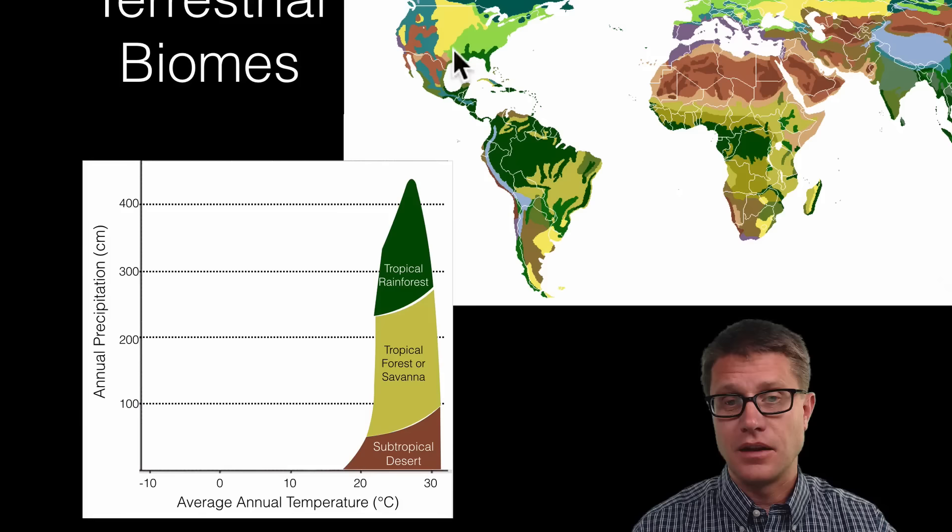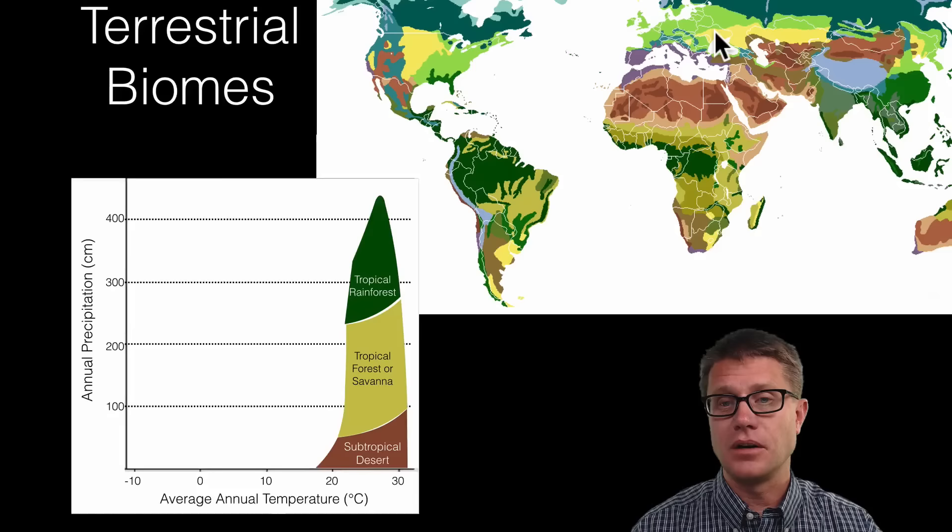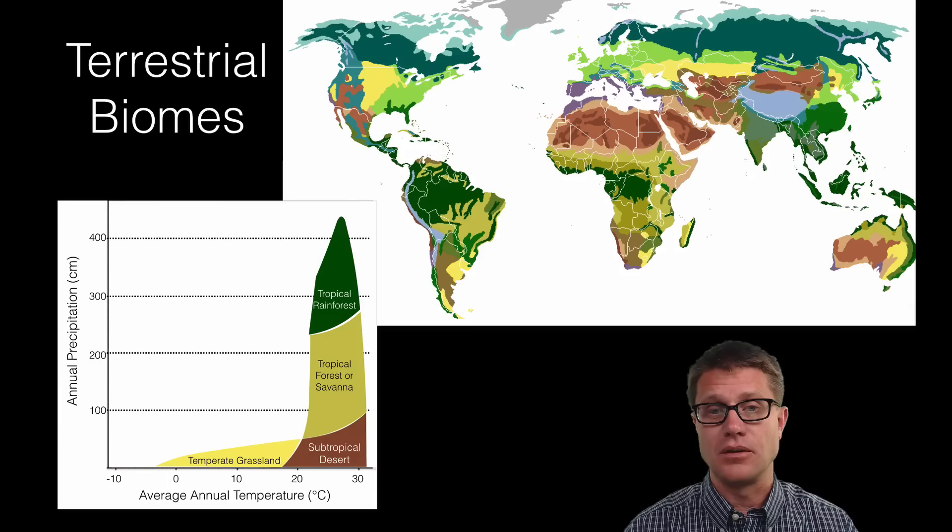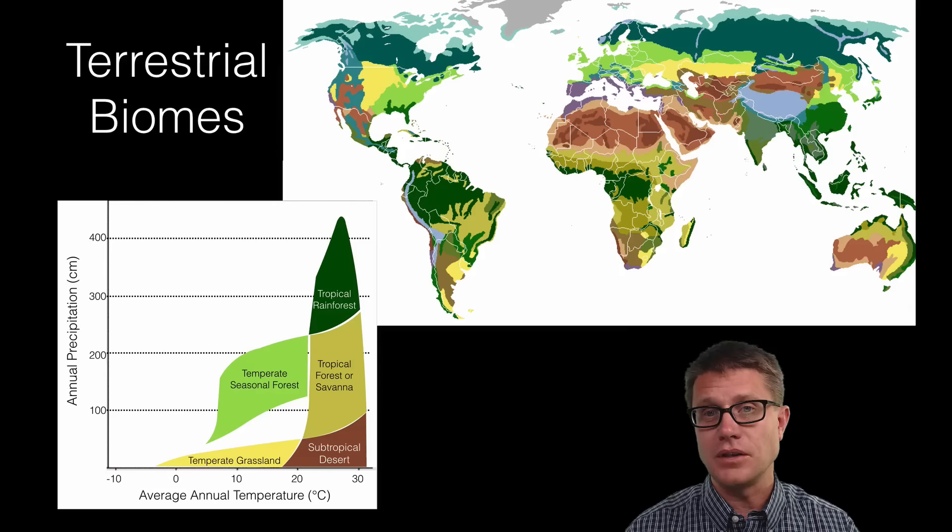If we keep going across from Africa, we are then going to have temperate grasslands. Sometimes we have temperate deserts. You can see that we have a lot of those in the Midwest of the United States. If we keep going then we are going to get to temperate seasonal forests. If we keep going then we go to the boreal or northern forests and then we eventually get to the tundra. So these are the major biomes.